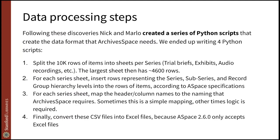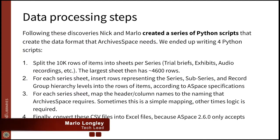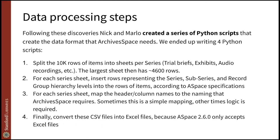We ended up having to do four different processing steps. We started out trying to write one step, but along the way came up against blockers and needed to go back and rewrite or rearrange the script. To get around the ingest size limit, we first split the data sheet into separate sheets depending on what kind of series they're in — series being a conceptual organization of the types of items in the collection.